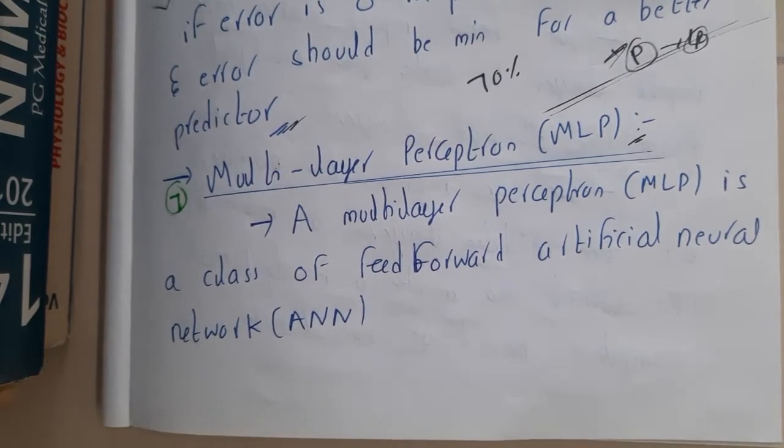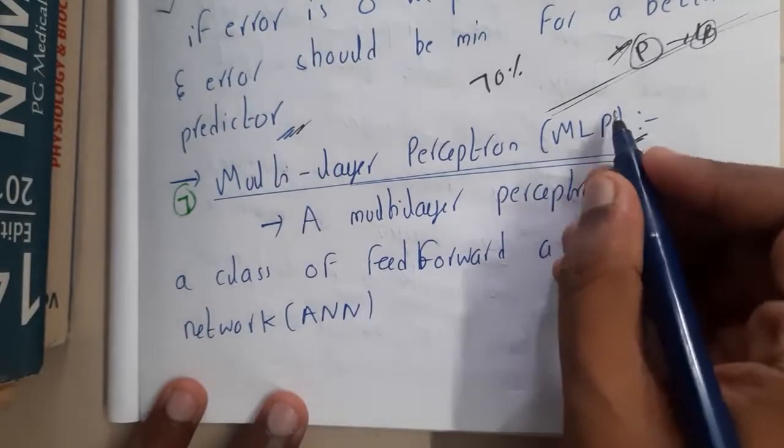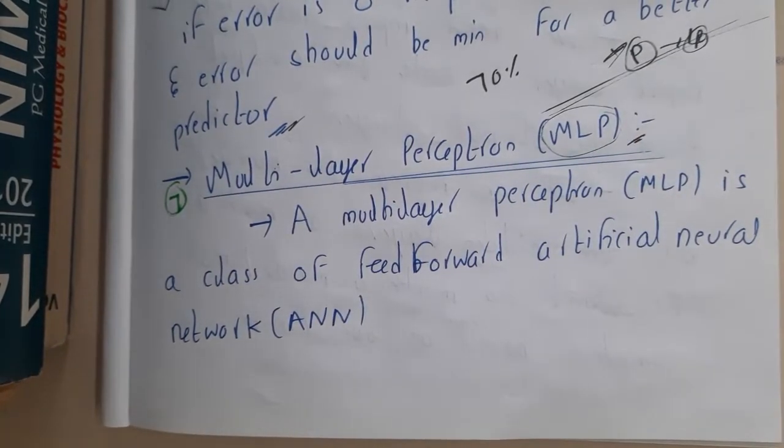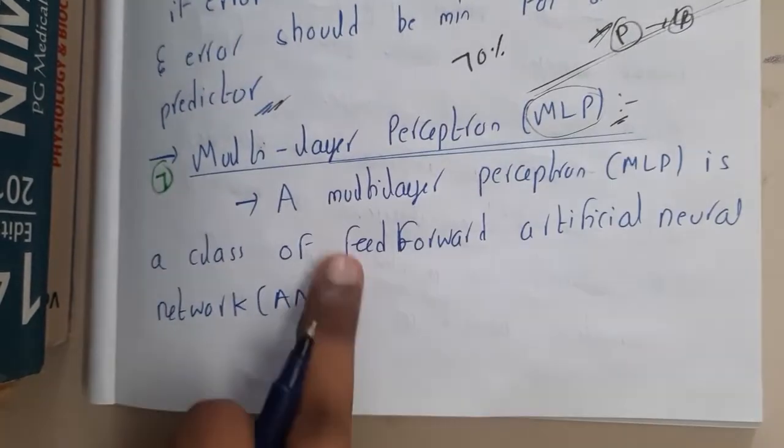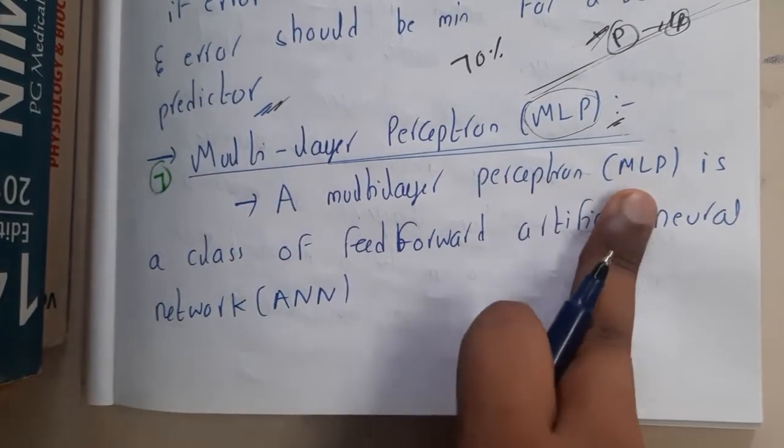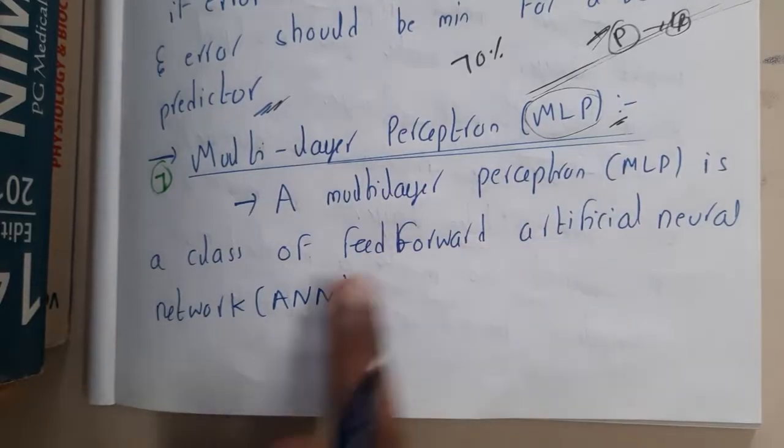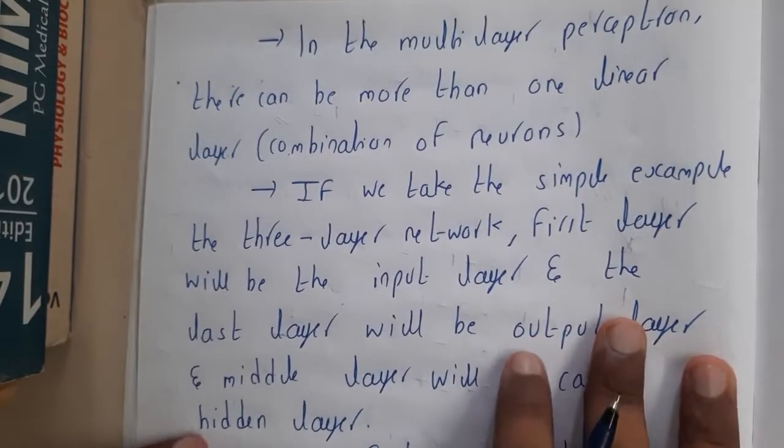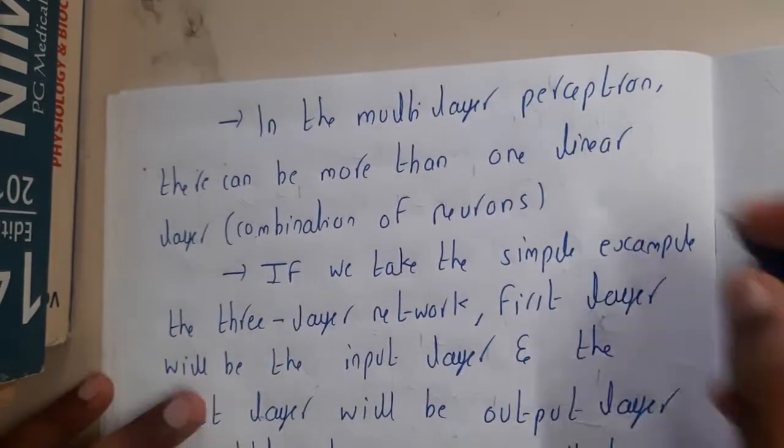Let us go through the conceptual understanding in this lecture. Multi-layer perceptron, or MLP in short form, is called MLP. In question papers, they may ask explain about MLP, so remember that it is multi-layer perceptron. A multi-layer perceptron is a class of feedforward artificial neural network. Basically, this is a neural network.